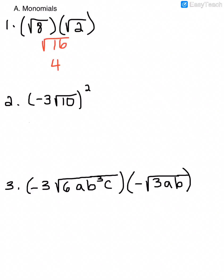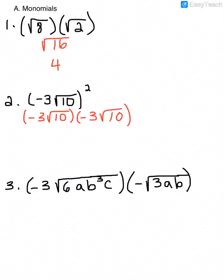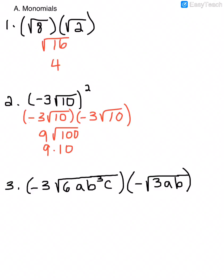For number 2, we have negative 3 square root of 10, squared. This just means that we're multiplying negative 3 square root of 10 times itself. Any number outside of the radical gets multiplied by any other number outside of the radical, so we multiply negative 3 times negative 3, which gives us positive 9. Then square root of 10 times square root of 10 gives us square root of 100, which simplifies to 10. We multiply 9 times 10 and get 90.